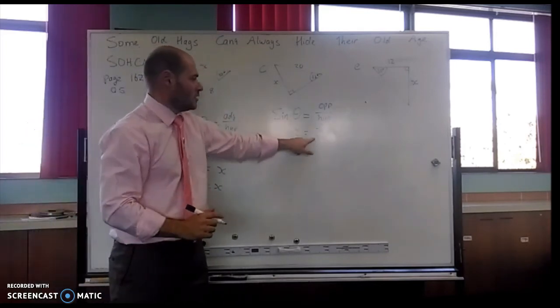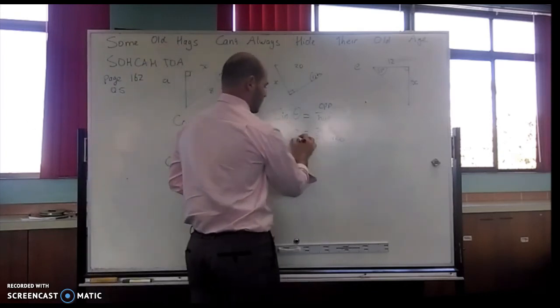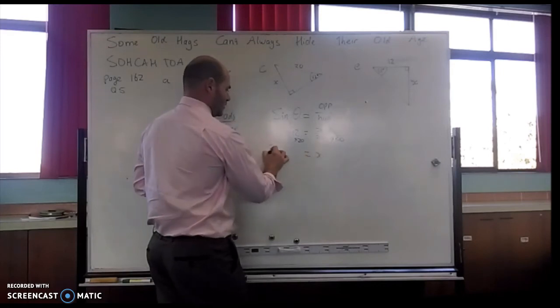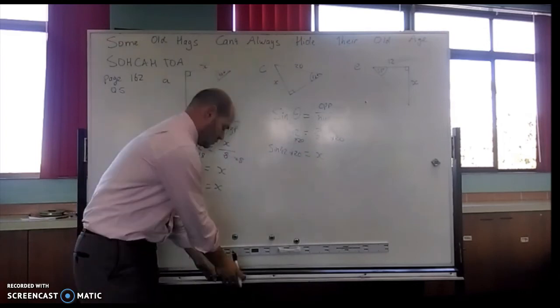I want x on its own, so I need to multiply this side by 20. Therefore, I multiply this side by 20. This side I'm left with x. This side I've got sin 42 times 20.